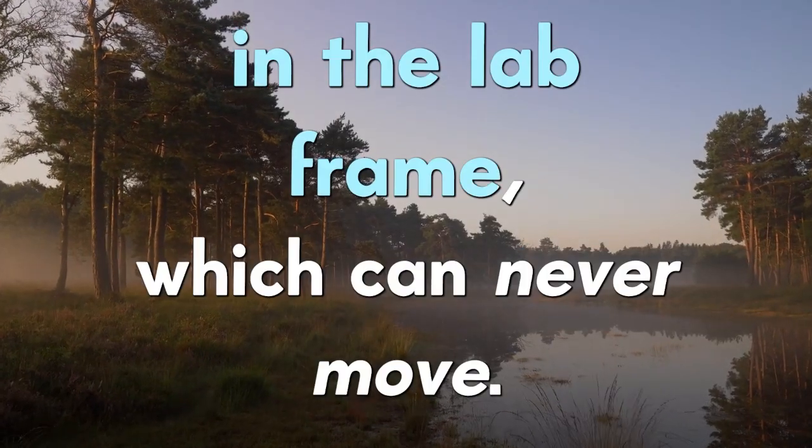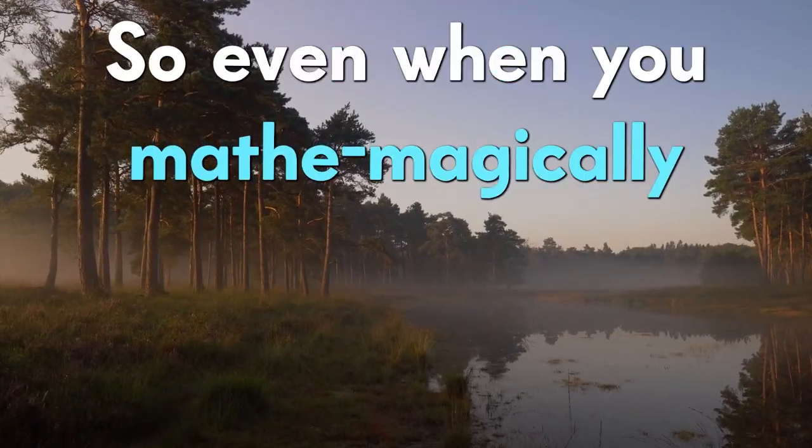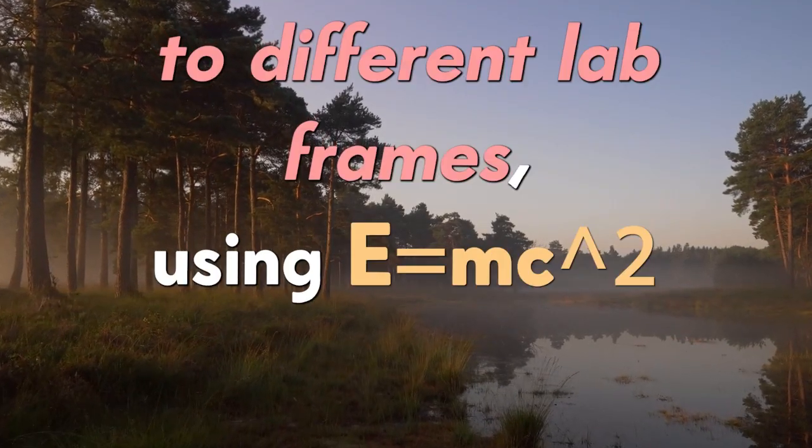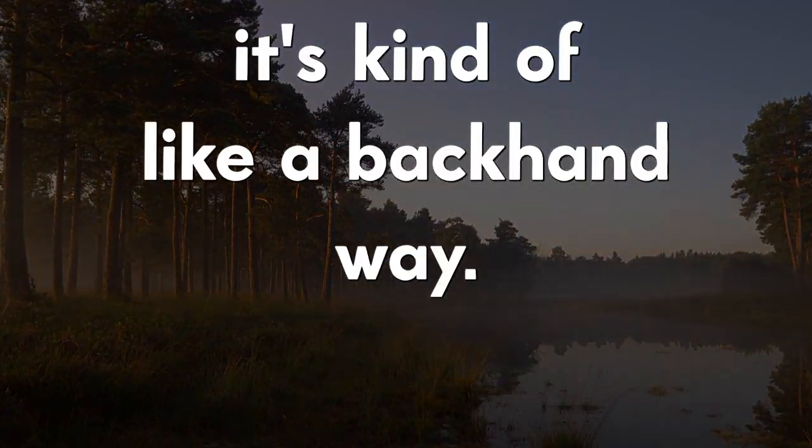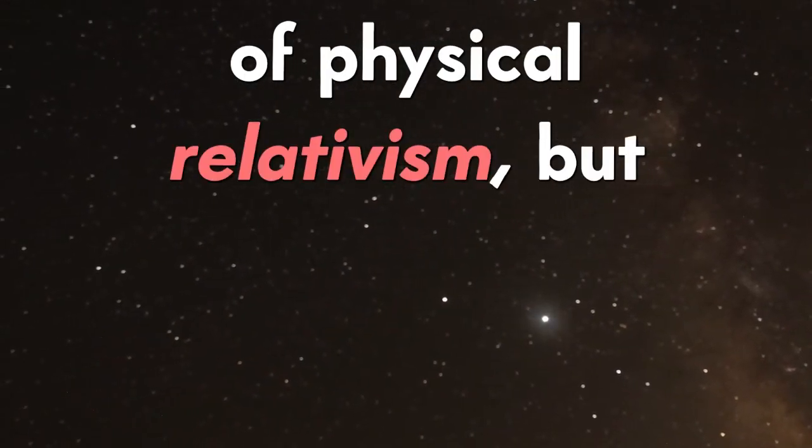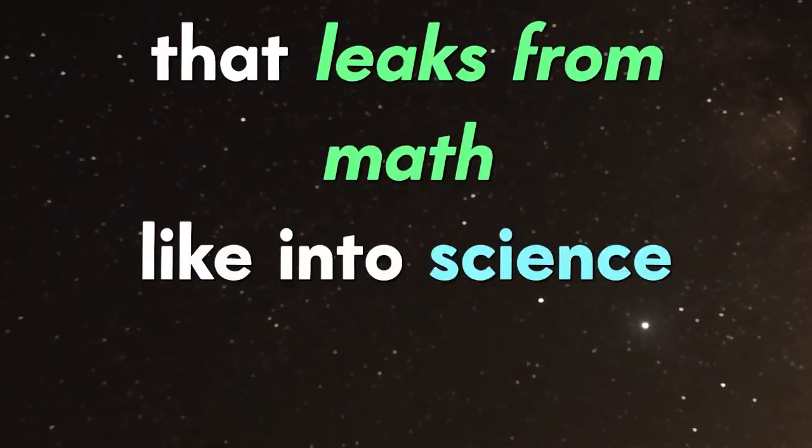Even when you mathematically describe how you can translate measurements in the lab frame to different frames using E=mc², it's like a backhanded way Einstein simultaneously invented not only to send science down a path of relativism, but a system of relativism that leaked from math into science, then philosophy, then religion, and eventually morality.